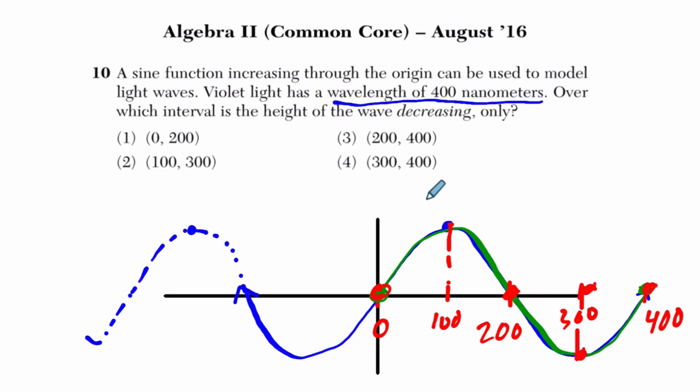And then we can answer the question because they say over which interval is the height of the wave decreasing only? Well, here I can see that it's decreasing. So it's got to be something here. So that's between 100 and 300. 0 to 200, you can see it's going up and down. So that's not it. 200 to 400, it goes down then up. So that's not it. And 300 to 400, it's increasing only.